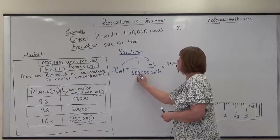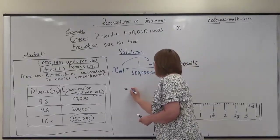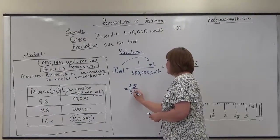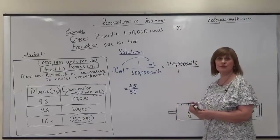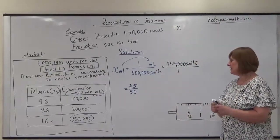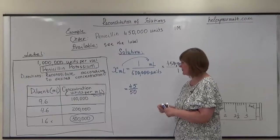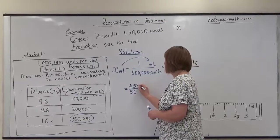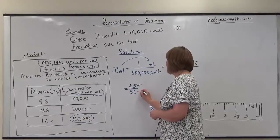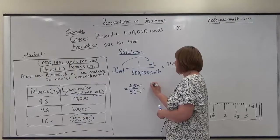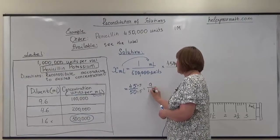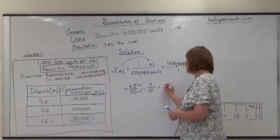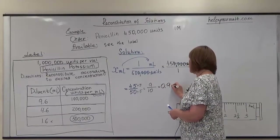Counting the zeros: 1, 2, 3, 4. We are left with the fraction 45 over 50. We know we have milliliters, which we will add at the end. Continuing to reduce: 45 and 50 are both divisible by 5, so we divide both by 5. 45 divided by 5 is 9, and 50 divided by 5 is 10, which is easy to convert to a decimal — that gives us 0.9 milliliters.